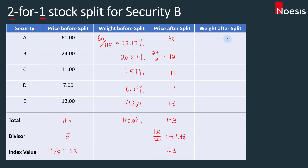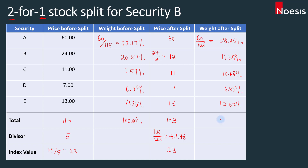If we calculate the weight after the split, we take 60 divided by 103, which is 58.25% for A. You can proceed to do the same for the rest: 11.65% for B, 10.68% for C, 6.8% for D, and 12.62% for E. That will total up to 100%.